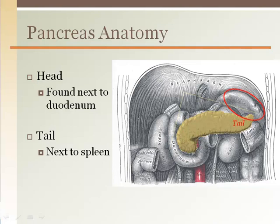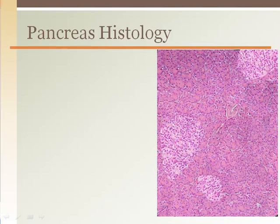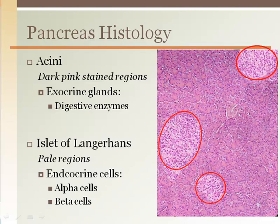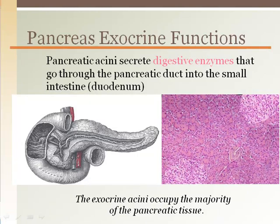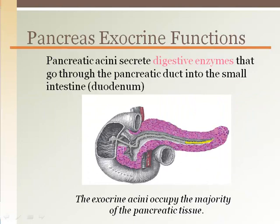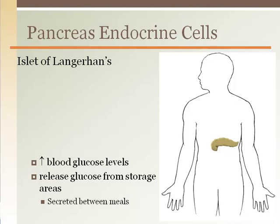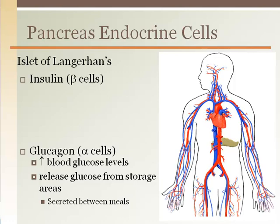When a slice of the pancreas is removed and stained, it looks fairly uniform with variations of pink. Acini are the clusters of exocrine glands stained dark pink. The light pink or pale regions are called islets of Langerhans — some are large and some are small. These islets are the endocrine portion of the pancreas, producing hormones. The islets of Langerhans have alpha and beta cells that produce glucagon and insulin respectively. The pancreatic acini secrete digestive enzymes through the pancreatic duct into the duodenum, and these exocrine cells make up the majority of pancreatic tissue. The hormones insulin and glucagon travel throughout the entire body via the blood.